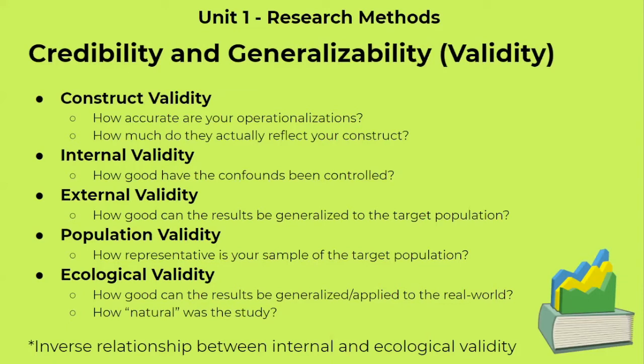Next is internal validity — inside an experiment, how well have the confounds been controlled, and how accurately can we determine a cause and effect relationship between variables? Next is external validity — how well can the results be generalized to the external environment or the target population? This brings us to population validity, meaning how representative is our sample of our target population. Lastly, ecological validity is how natural or applicable your study is to the real world. It shouldn't be too controlled or artificial, or the ecological validity would be low.